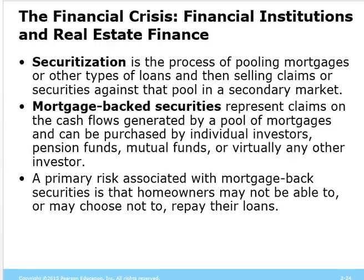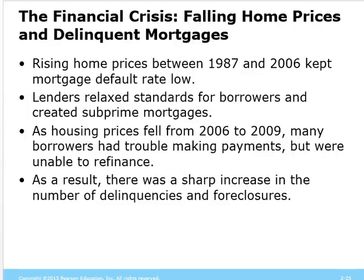These mortgage-backed securities were found to be full of bad loans. Investors started shorting them — hence the title The Big Short — creating instruments that would make money if these mortgage-backed securities fell in value. Rising home prices from 1987 to 2006 had kept defaults very low, but as lenders relaxed their standards so greatly and housing prices started to fall, we had the recipe for a huge bursting of the real estate bubble.